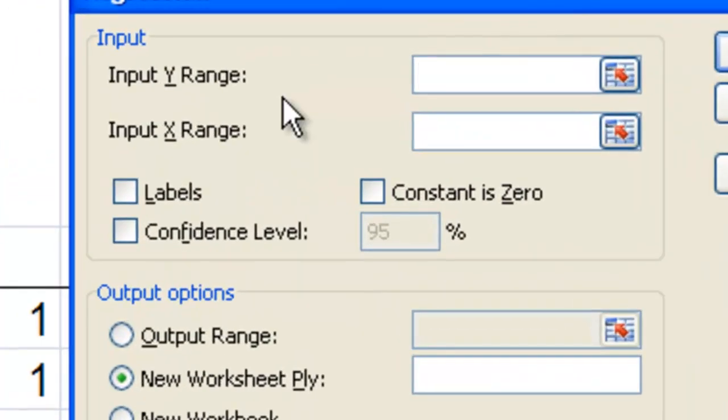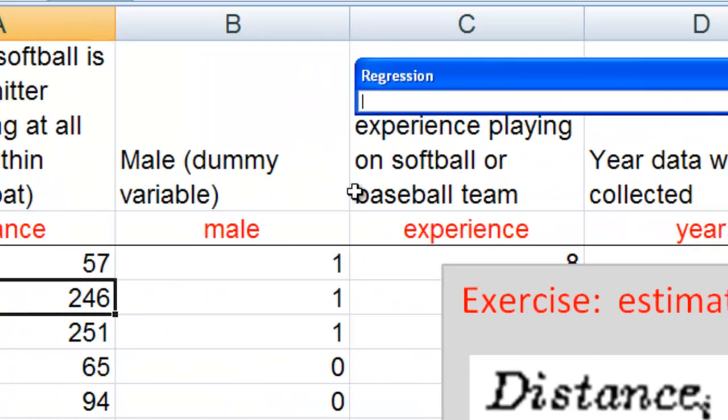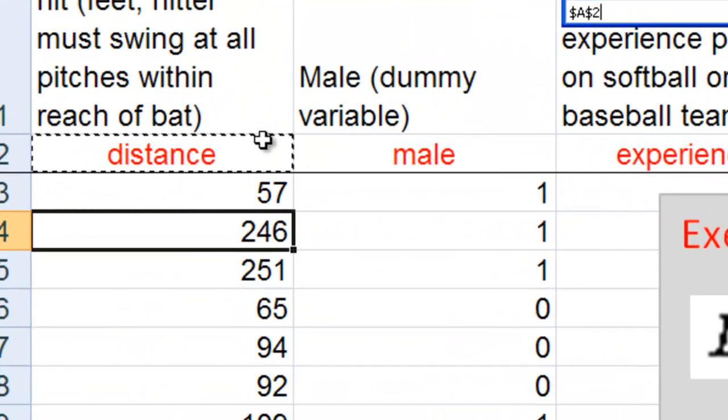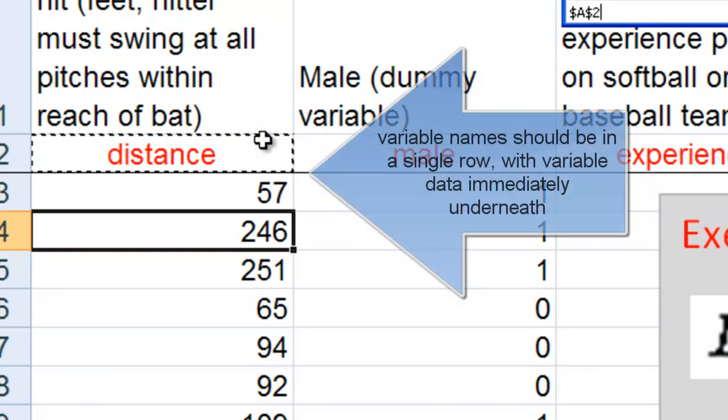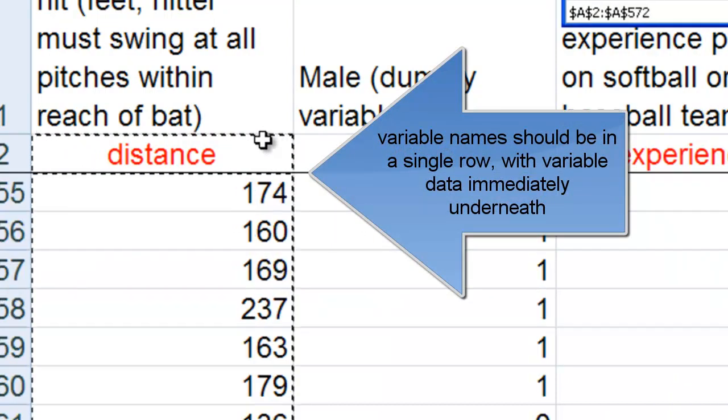It's asking me here what is my input Y range. Y is always the data that we are predicting. So I'm going to select for my Y variable, that's my hitting distance. I'm going to select the variable name distance and all the data underneath it.